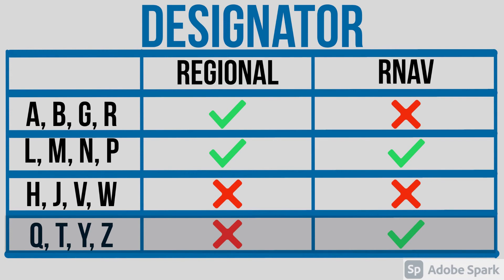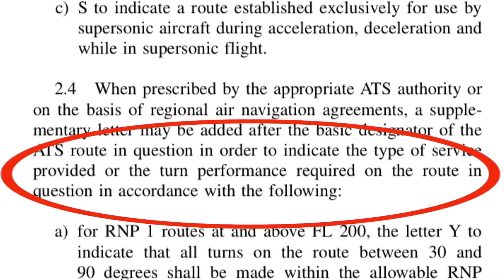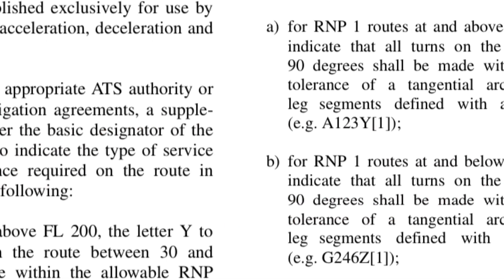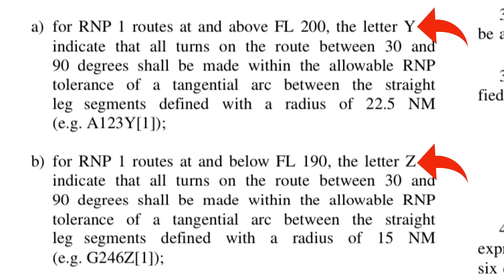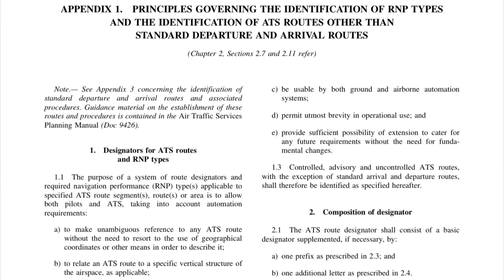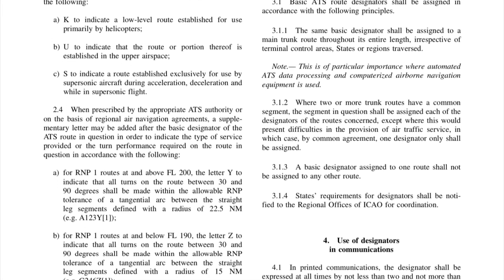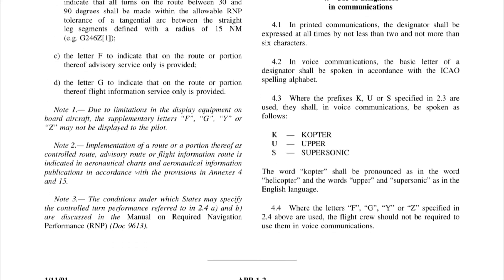Moving on, airways can also have a suffix, which is used to indicate a type of service provided and the performance required on that airway in question. However, due to limitations in the display equipment aboard aircraft, those suffix letters may not be shown sometimes, so I'm not going to go into them. You can check what those suffixes mean in the ICAO document linked in the description below.